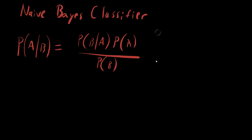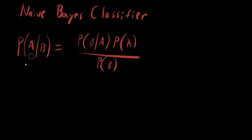The Naive Bayes classifier is a very simple statistical learning technique that leverages the relationship of Bayes' theorem to perform a classification task that is otherwise difficult to simply estimate. When there is lots of evidence available from different features of data, you can make an estimate of what the likelihood of the event of interest is. This is our posterior, this is our likelihood, this is our prior, and this is our evidence.